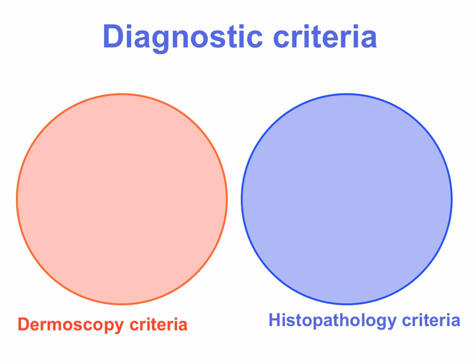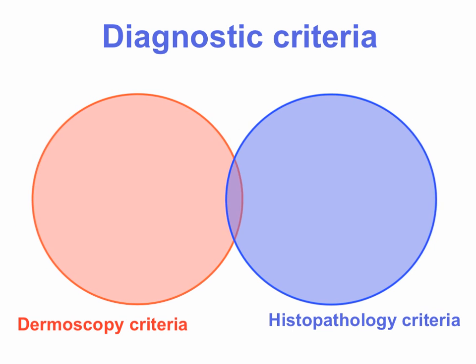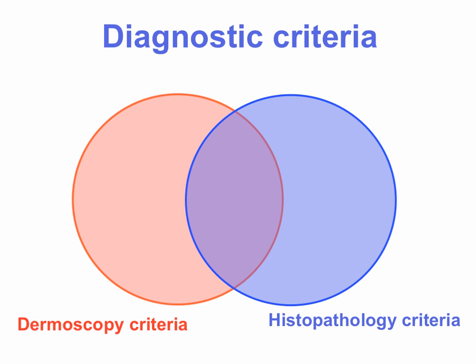We have dermoscopy criteria and we have the diagnostic criteria for histopathology. There are some that are only accessible with dermoscopy, and there are some that are only accessible with histopathology, but there's a big overlap, and this is what we're going to talk about — the criteria that are accessible both by dermoscopy and histopathology. Dermoscopy provides a horizontal overview of the entire lesion, and histopathology gives you a vertical but very focal view, but is still considered to be the gold standard.